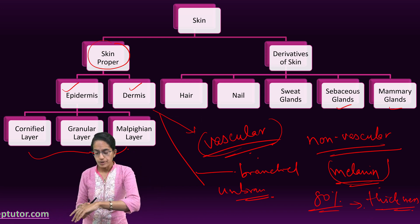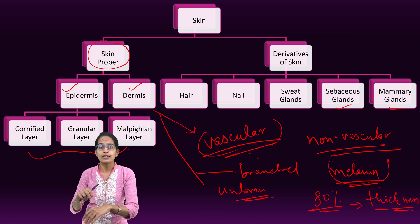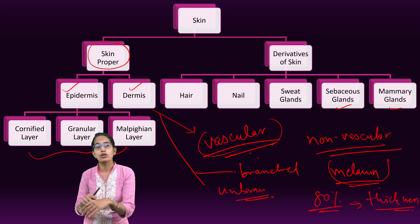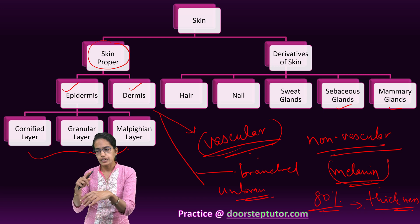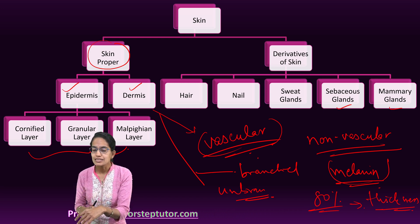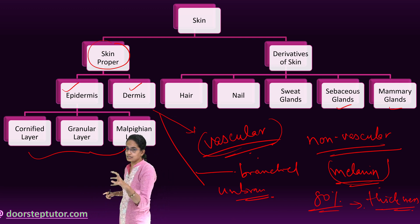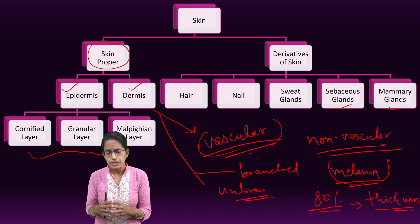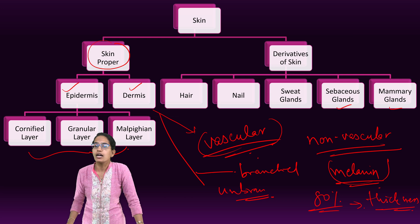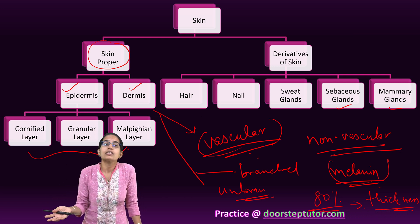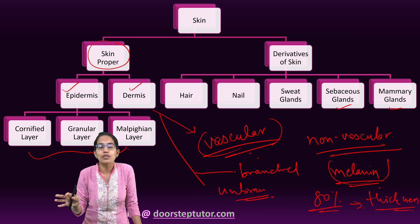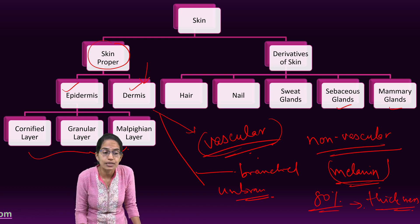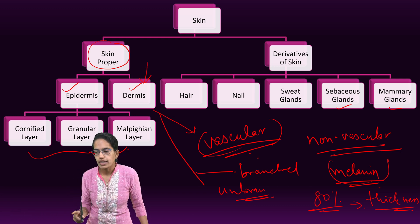Now, if there is a burn — if it is a superficial burn, it would only affect the epidermis. But if it is a deep burn, it would affect the dermis, and if it is very severe, it could affect the internal organs through the dermis as well, because dermis is connected to the internal organs. Dermis also has adipose tissue that regulates body temperature. In animals, the hide is obtained from the dermis layer, not the epidermis layer.